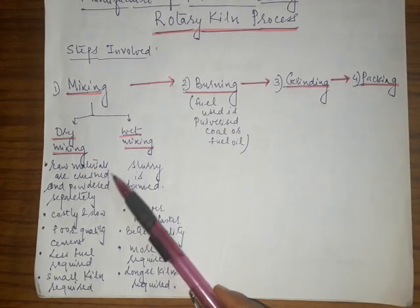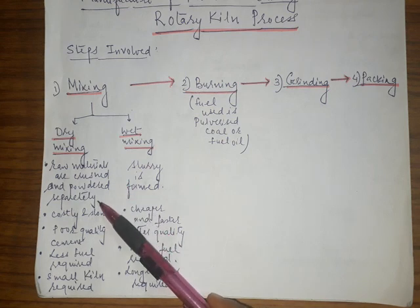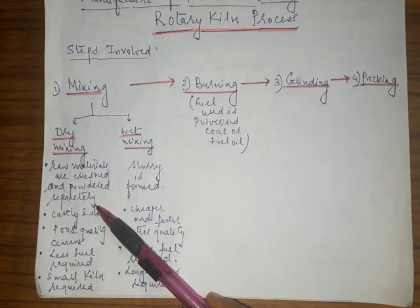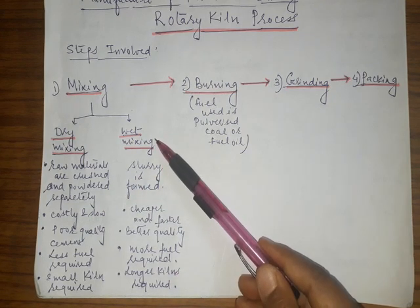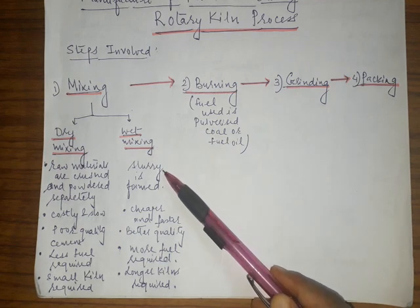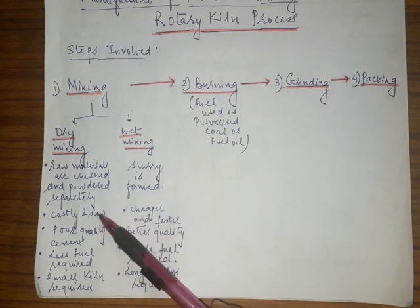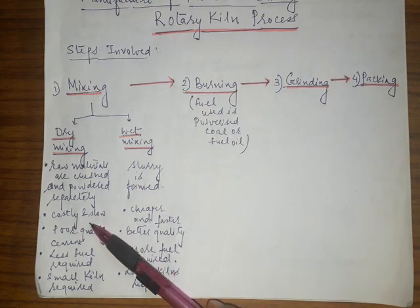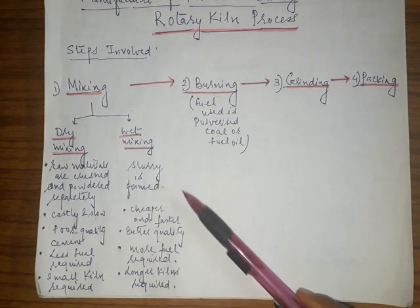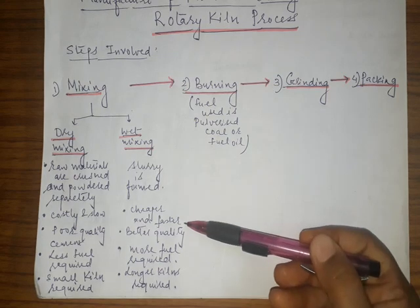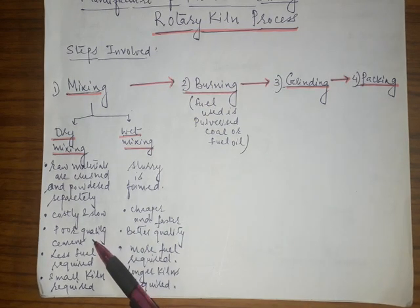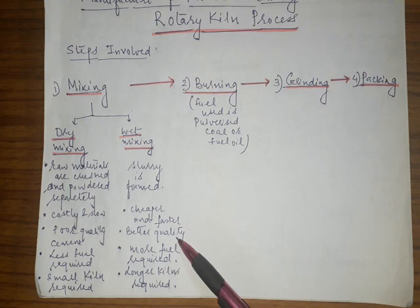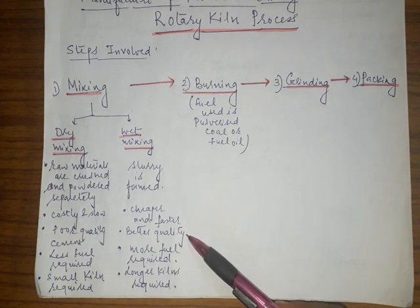In the dry mixing process, raw materials are crushed and powdered separately without mixing with water. In the wet mixing process, the raw materials are mixed with water to form a slurry. The dry mixing process is costly and slow, while wet mixing is cheaper and faster. Cement produced by dry mixing is of poor quality since the dry mix doesn't blend properly, whereas the slurry allows raw materials to mix very thoroughly, producing far better quality cement.